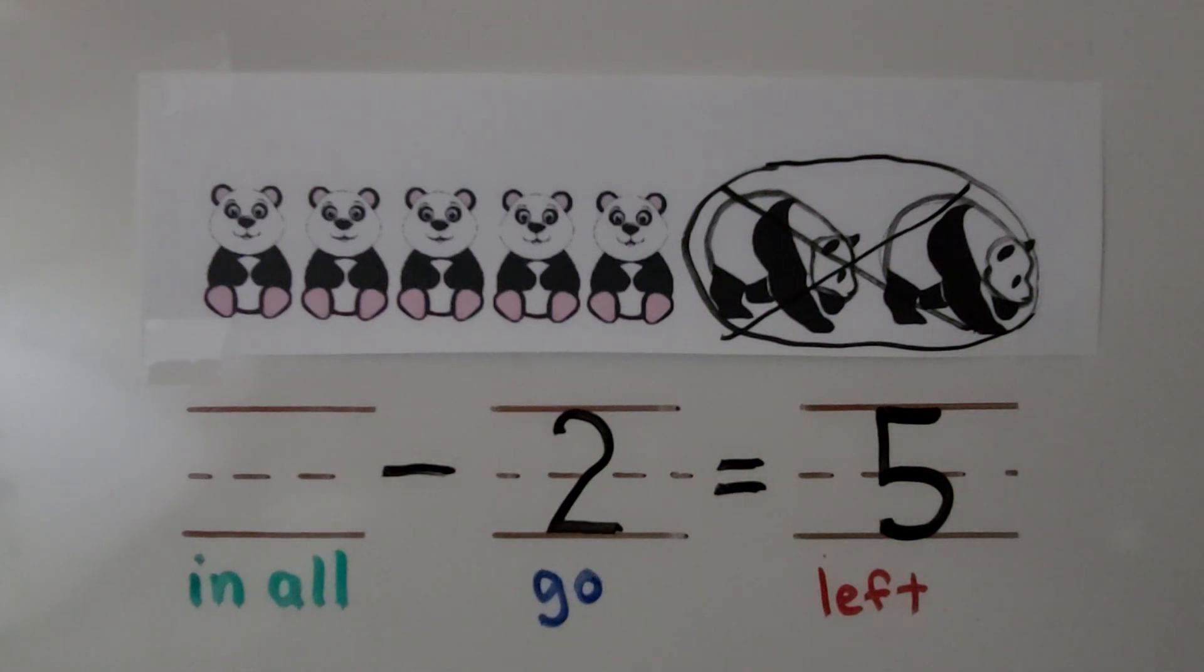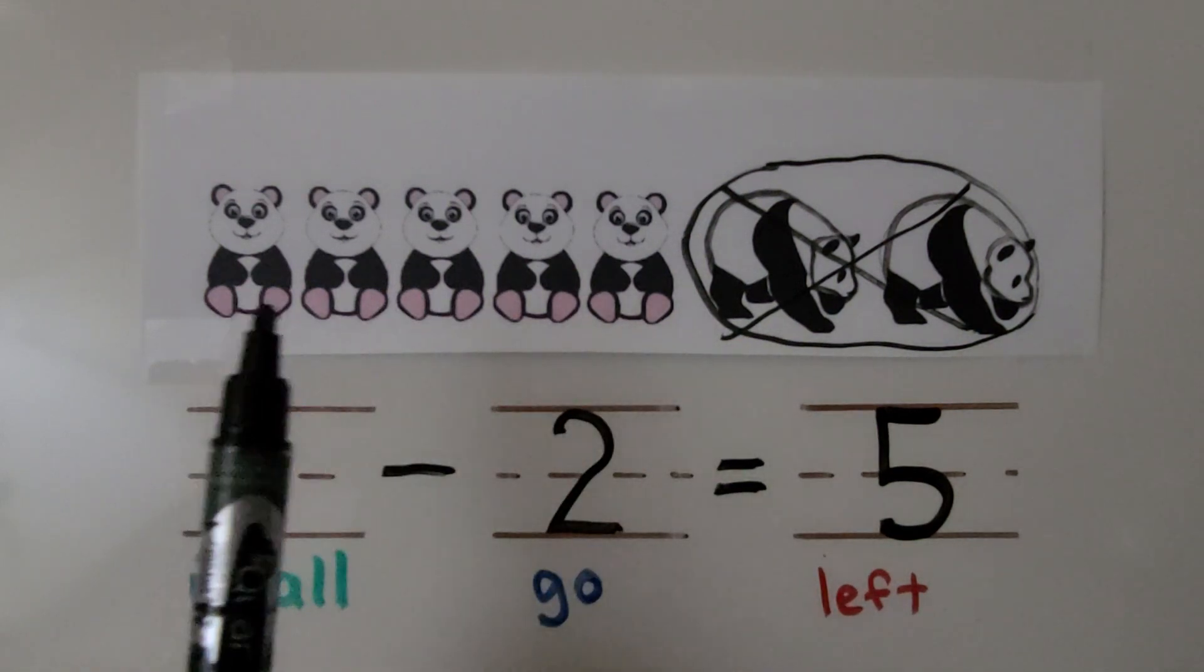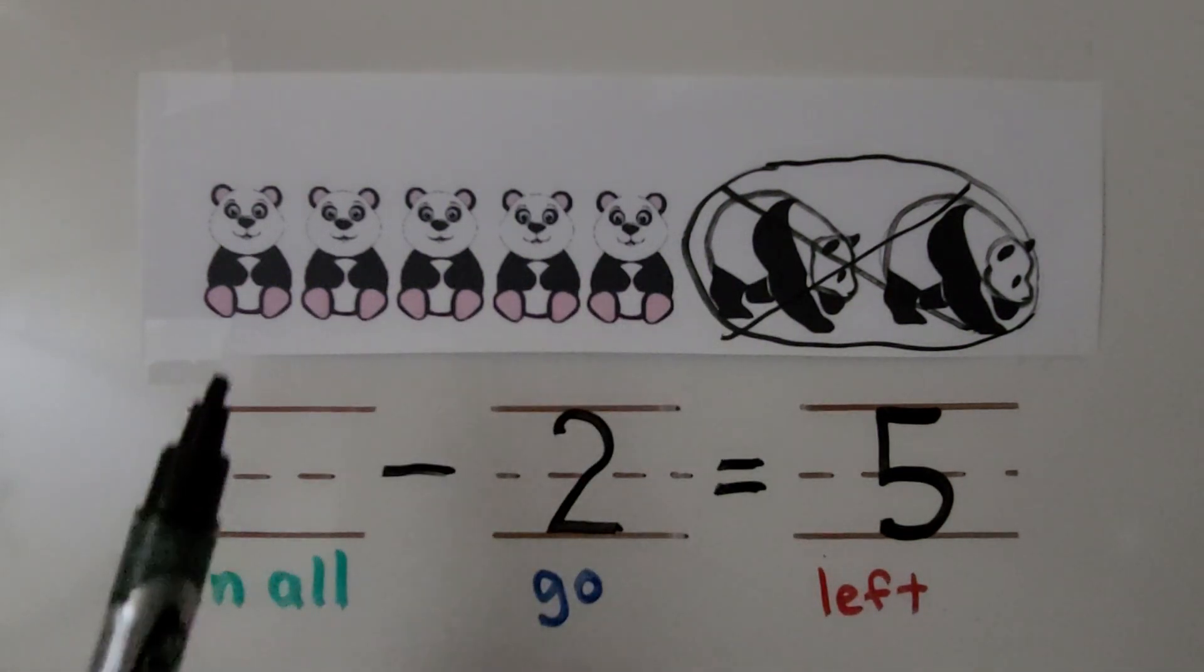And how many are left? It told us there were five left. There's five pandas still there. So how many pandas were there to start in all? We need to find how many in all. We can look at the picture and count all the pandas, even the crossed out ones.